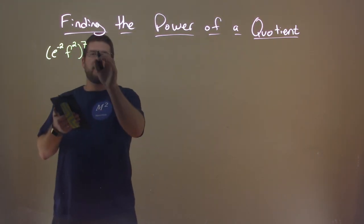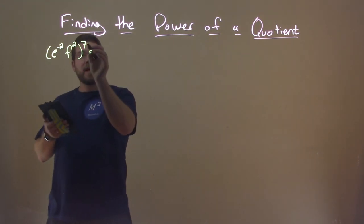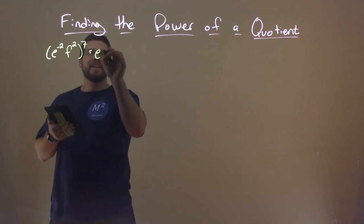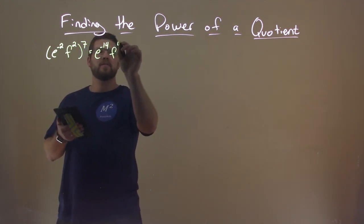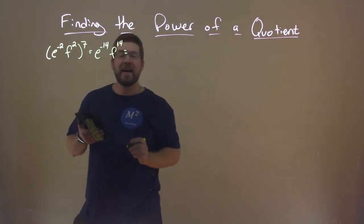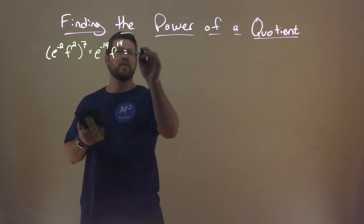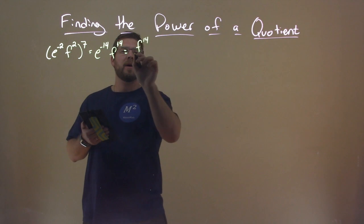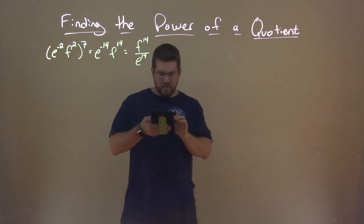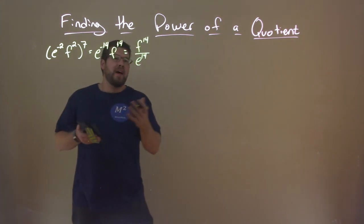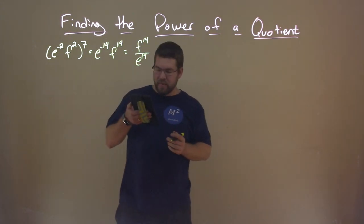We kind of talked about that, right? We distributed out the 7 and we got really e to the negative 14th power times f to the positive 14th power. And that ended up simplifying, going quickly through it, f to the 14th power over e to the positive 14th power. So we went over that in the previous example.